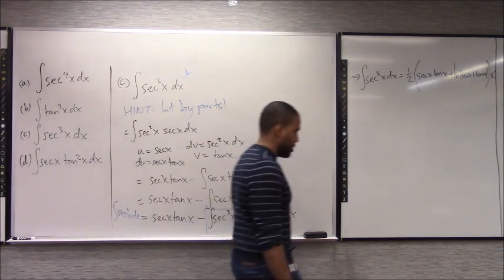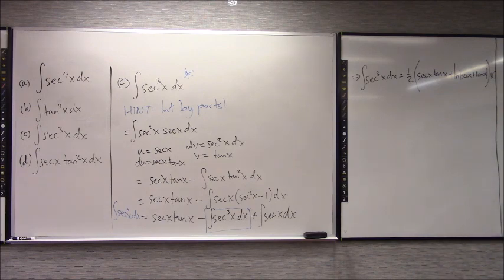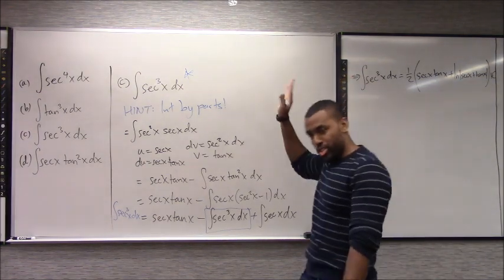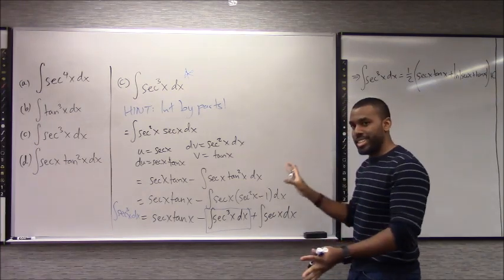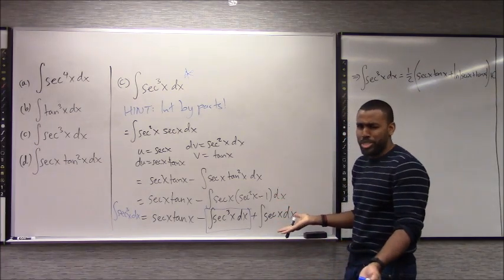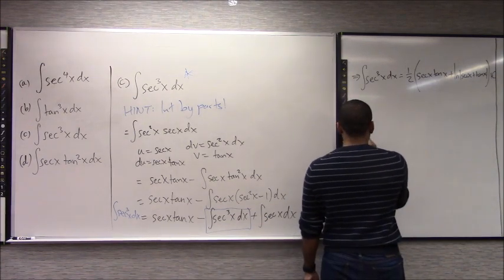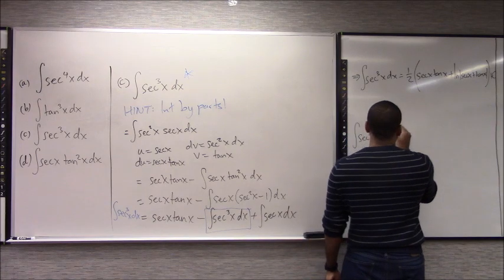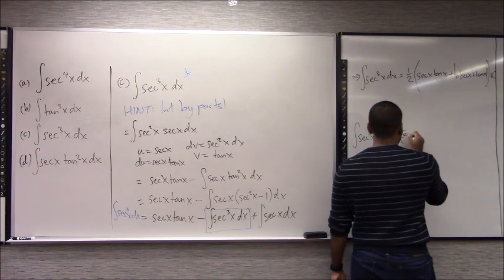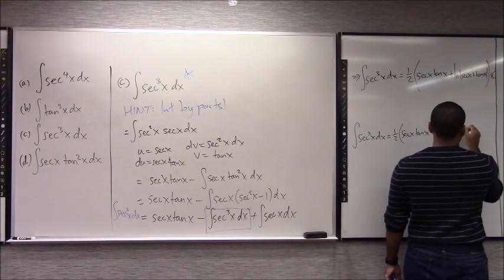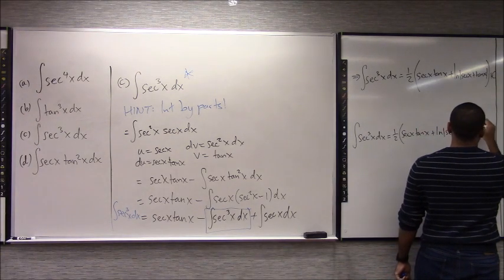At this point I'm going to say something that might seem kind of crazy. I want this to be one of your basic rules — memorize this. Surprisingly, secant cubed shows up all the time, somehow. So now the integral of secant cubed is something that you know: one half times secant x tangent x plus ln of secant x plus tangent x plus C. This is now one of your basic rules.